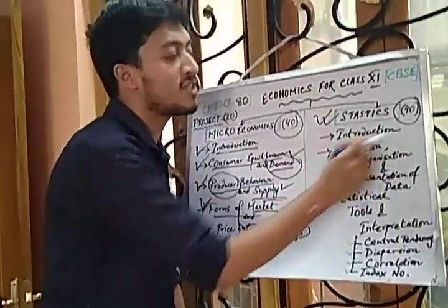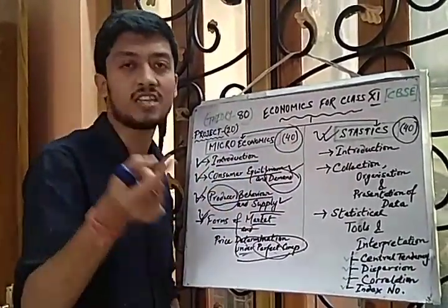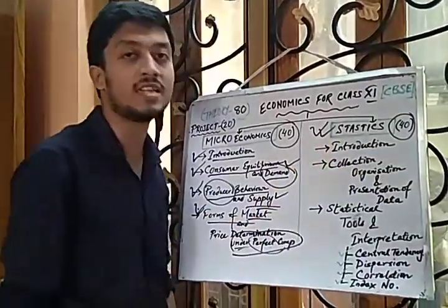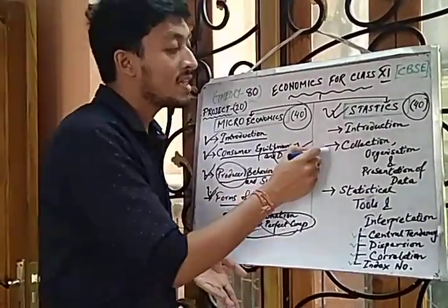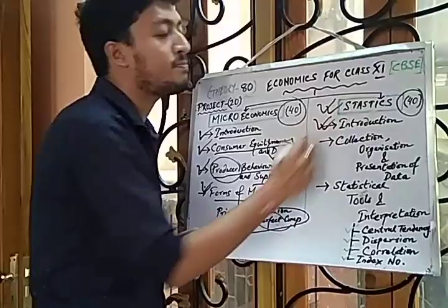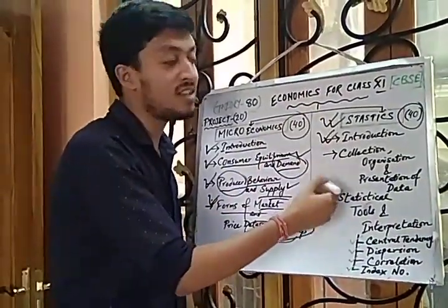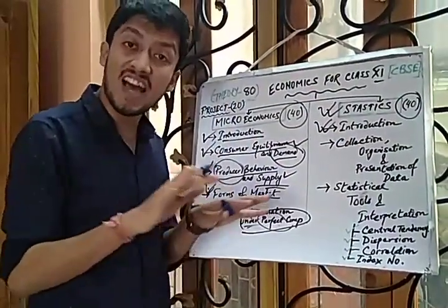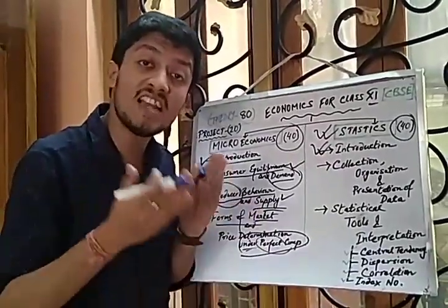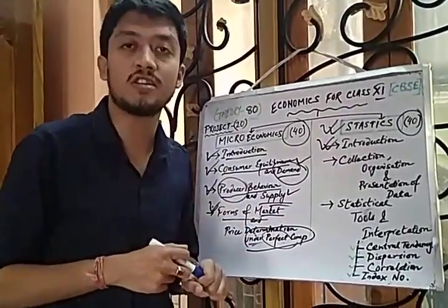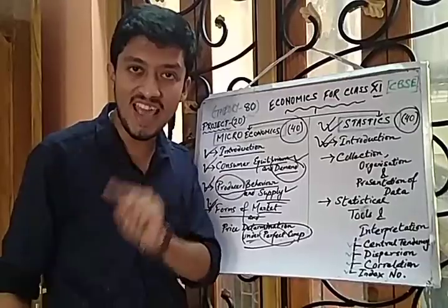The first topic in Statistics will be an introduction — similar to but slightly different from the microeconomics introduction — covering why statistics is part of economics, when and how it is applied. The second part covers the collection, organization, presentation, analysis, and interpretation of data. Statistics teachers use a short form for this: COPAI — C-O-P-A-I.